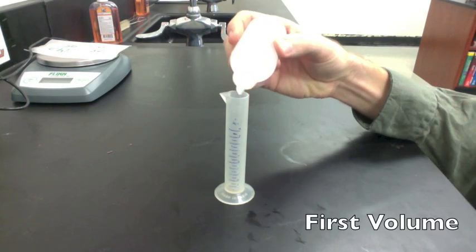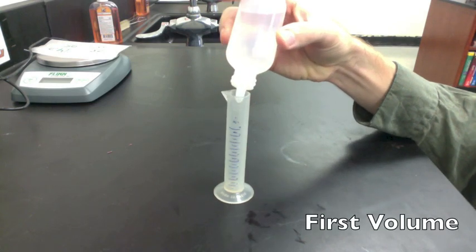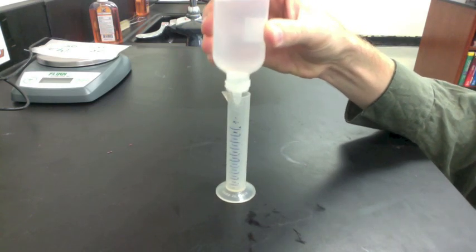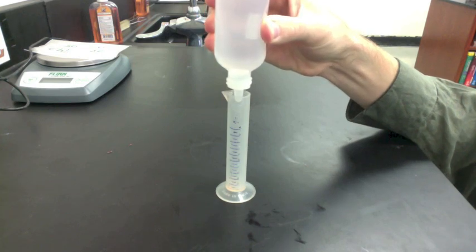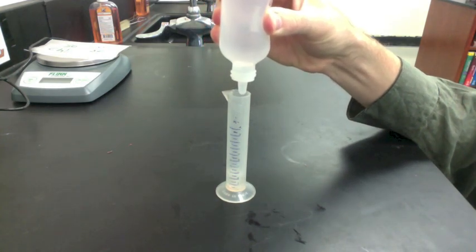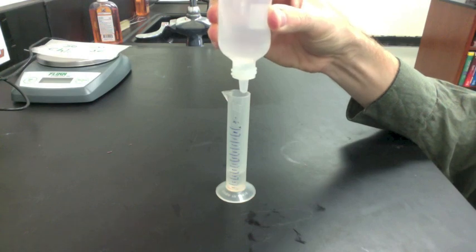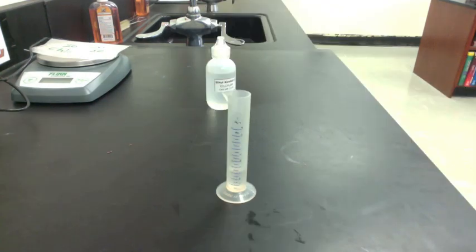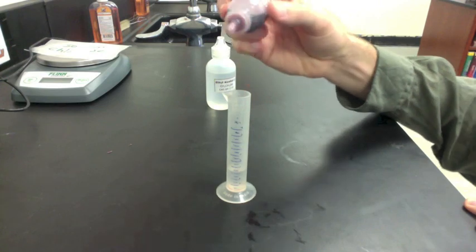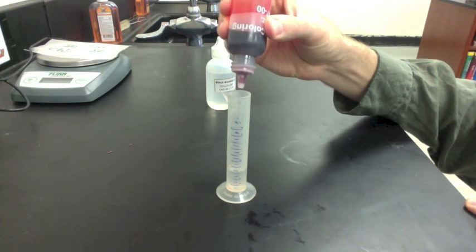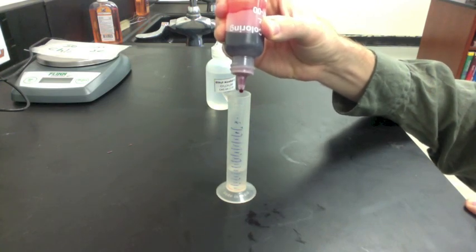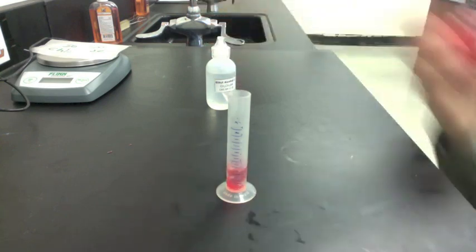To find the volume, we're going to put ethyl alcohol into an empty graduated cylinder. Ethyl alcohol is colorless. It's hard to see on camera. So I'm going to put one drop of red food coloring to make it easier to see.